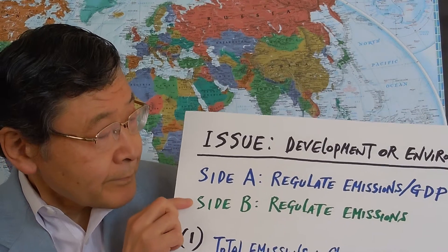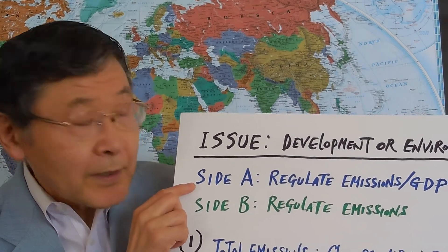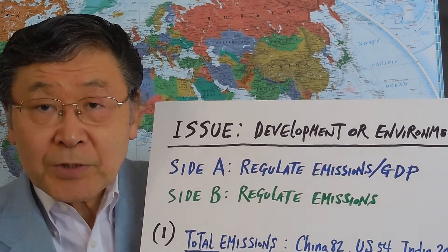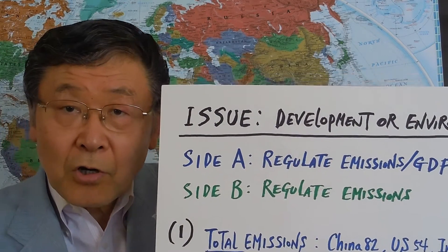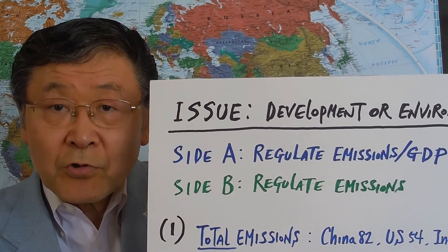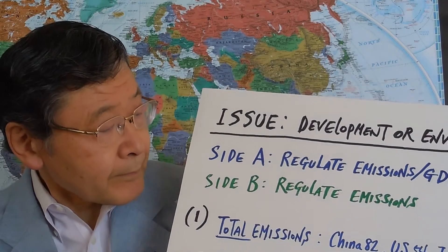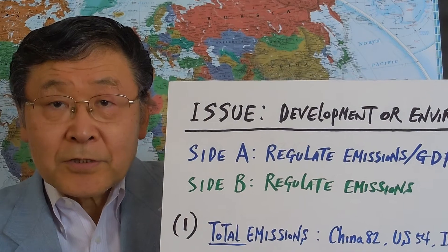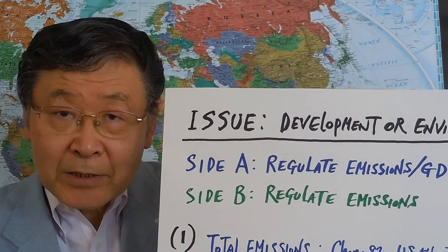Let's take up the issue of development or the environment. Nowadays, everyone recognizes the importance of the environment in the process of economic development. However, there is a difference in adopting emissions targets, like greenhouse gas emission targets. Side A is to regulate the ratio of emissions to GDP, so that GDP is allowed to grow so long as greenhouse gas emissions grow slower than GDP. Side B is to regulate the absolute level of greenhouse gas emissions so that there will be no more greenhouse gas accumulation in the air.